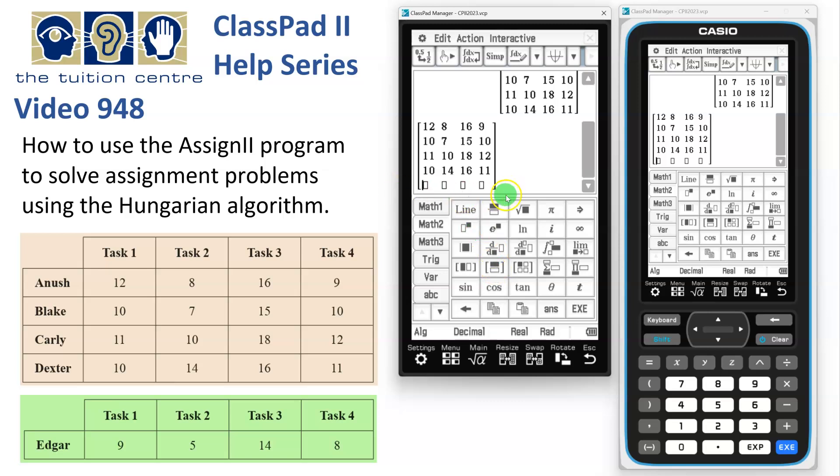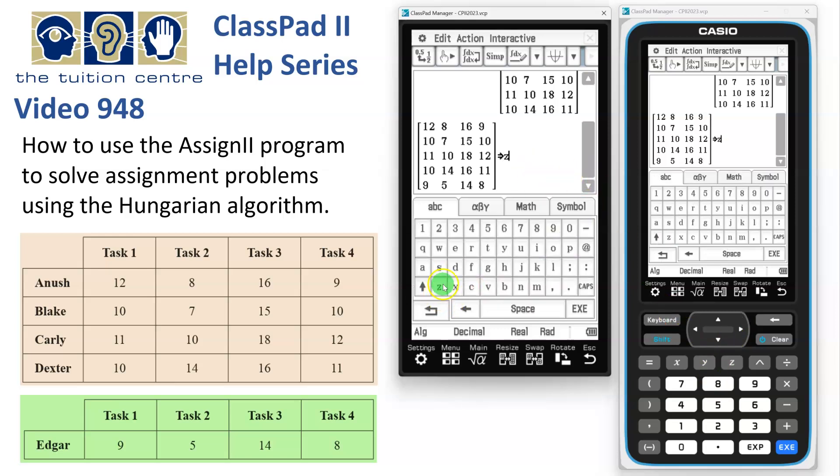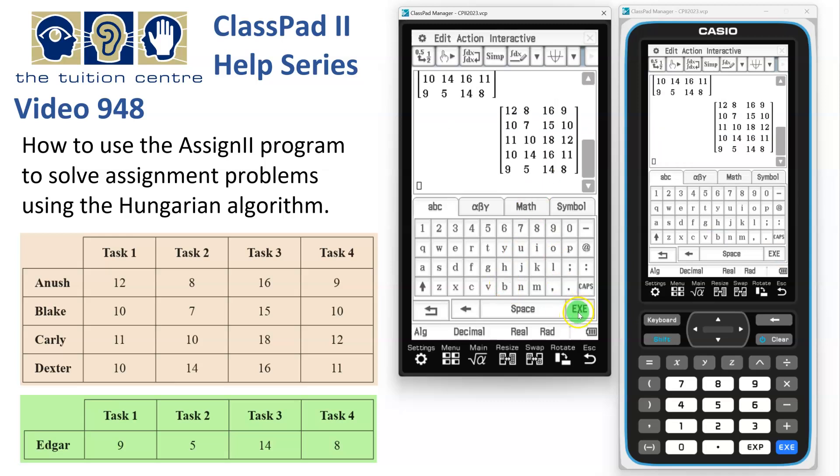So we're going to type in 9 and 5 and 14. I don't think Edgar will be doing that job, but maybe, we never know. And then 8. And then this time let's store it into matrix B. OK. And where did that Z come from? So let me just get in a B there. OK, so we'll hit execute.